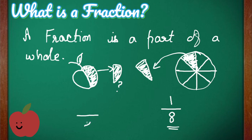Below the line, that is in the denominator, we write the total number of equal pieces, which is 2. In the numerator, we write the number of pieces that have been used, which is 1. So this is written as 1 by 2 in fractions.